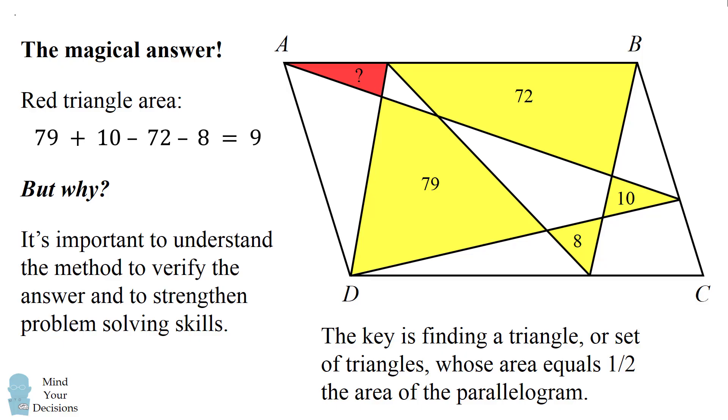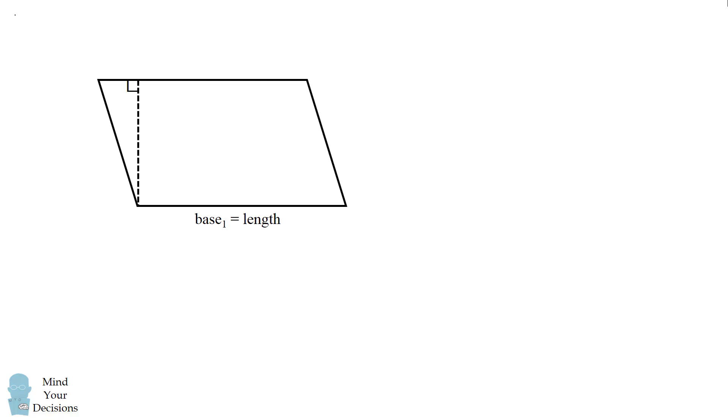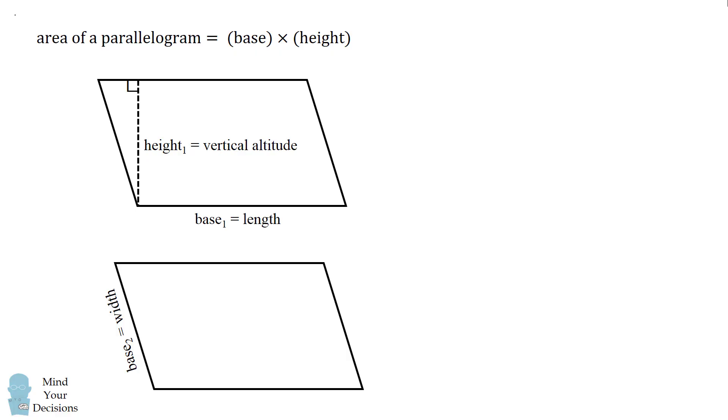So before I get to the solution, I want to quickly review the areas of a parallelogram and a triangle. So let's take a parallelogram, and we'll consider the base of the parallelogram as its length. To find the area, we draw a vertical altitude as its height. Now the area of a parallelogram is its base times its height. But we can also calculate it taking the width of the parallelogram as its base. We then draw a horizontal altitude as its height, and we then use the same formula of base times height. Even though we'll be using different values for its base and its height, this will still give us the area of a parallelogram.